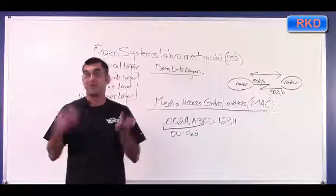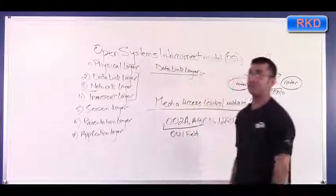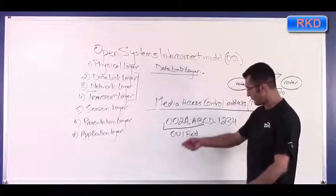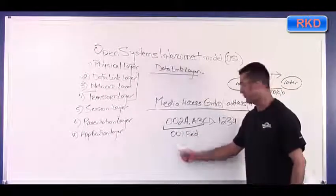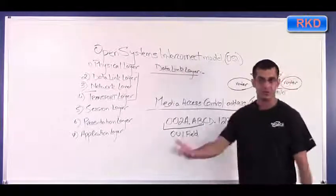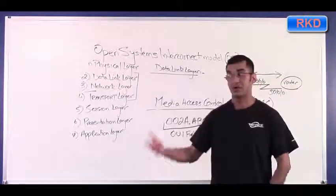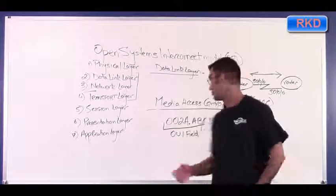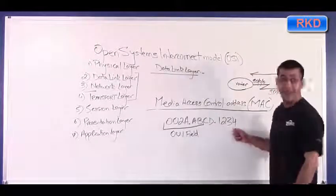So the first MAC address created by Cisco ever was probably a vendor-specific OUI field, and then 000001, and they went from there. 0002. So the 10th router they made was probably 00000A, and so on and so forth.